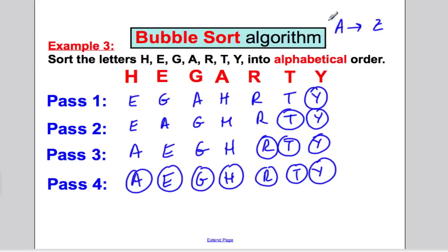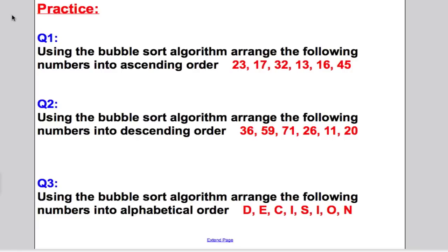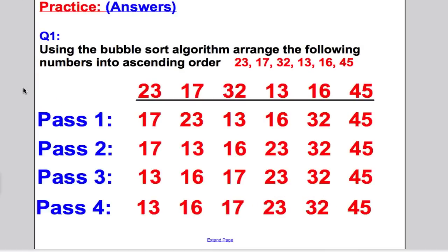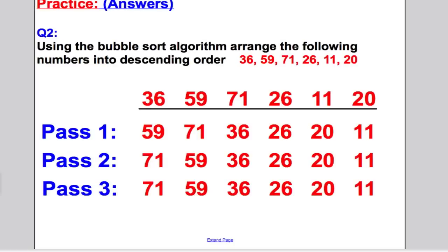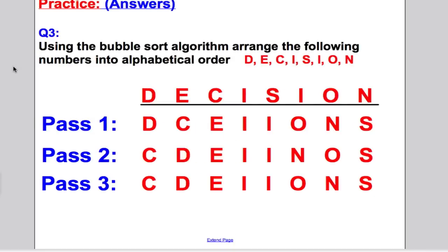At this stage I'm going to put some questions up for you. Pause the video and have a go on paper, then I'll put the answers up for you to mark your work and make corrections if necessary. The answer to question one took four passes. The answer to question two took three passes. The answer to question three also took three passes. Please mark your work.